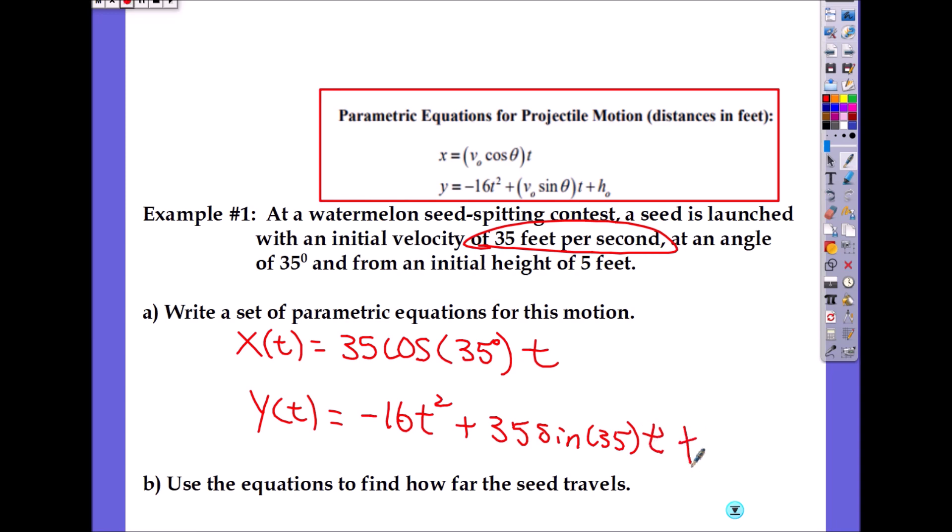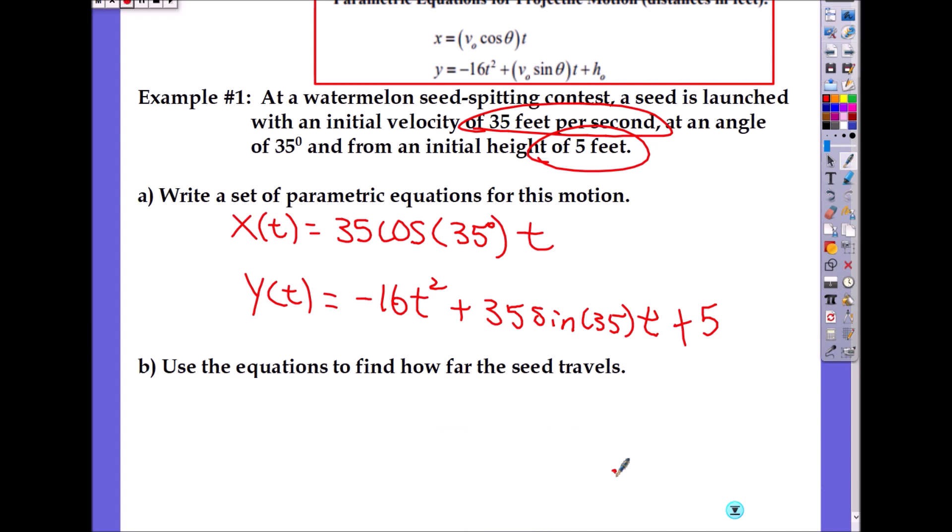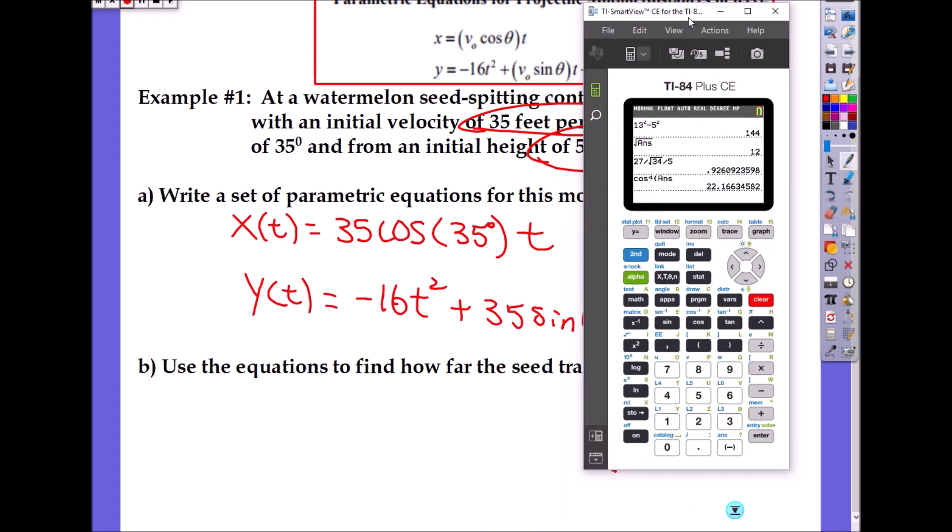When you graph the parametric equation, you have to reset the mode of the calculator. Go to the calculator, click on mode. They gave us 35 degrees, so your mode should be in degrees and parametric. Click on those two. Then you go to Y= and now they will have x and y separately.